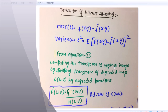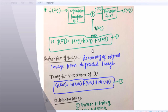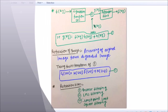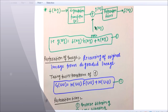First, let's check what is the use of Wiener filtering. Wiener filtering is used to restore an image. Our image gets degraded due to atmospheric effects, blurring, and motion of the picture sensor. To restore it — to get back the original image — we use a restoration filter. Restoration filters include inverse filtering, LMS filtering, and constrained least square filtering. Now I'm going to explain LMS or Wiener filtering.